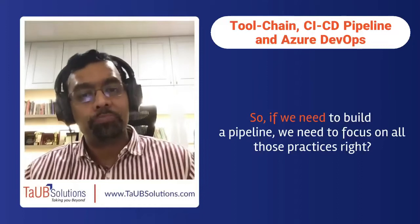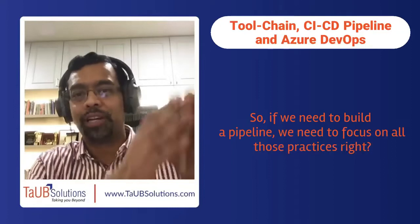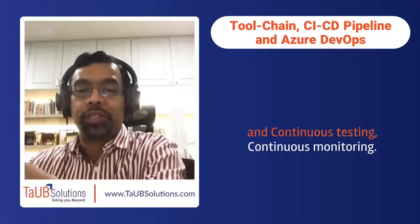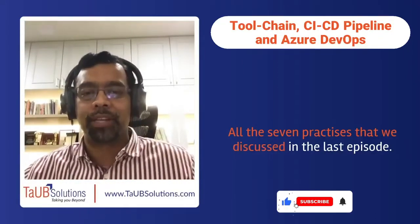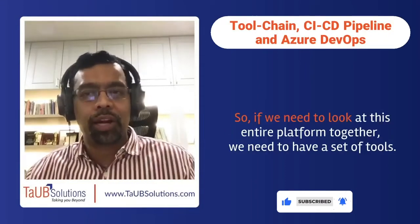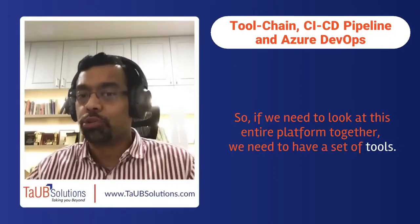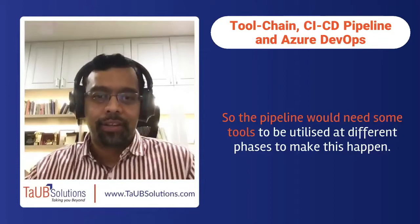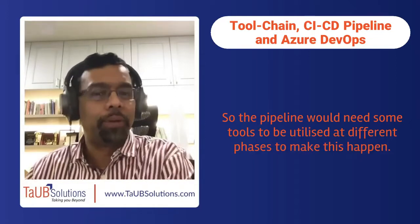If we need to build a pipeline, we need to focus on all those practices: continuous integration, continuous delivery, continuous deployment, continuous testing, continuous monitoring — all the seven practices discussed in the last episode. If we need to look at this entire platform together, we need to have a set of tools. The pipeline would need some tools to be utilized at different phases, and that is what we call a tool chain.